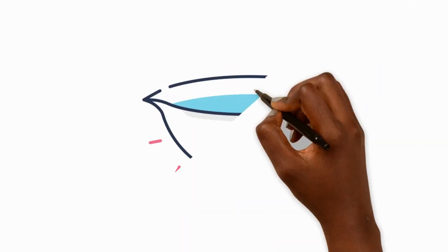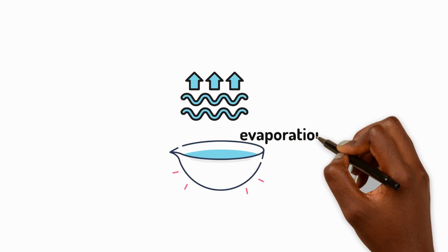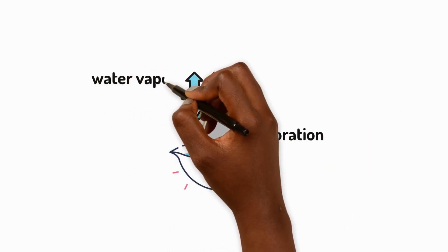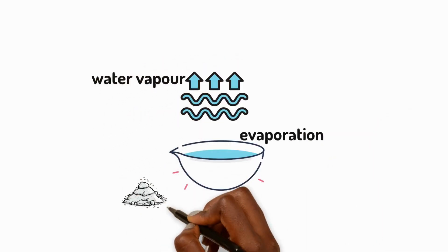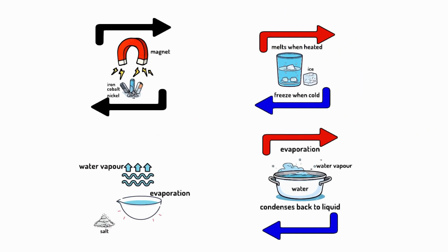Even soluble materials like salt can be separated from water after they dissolve. In this example, we can use evaporation. The water leaves the solution as water vapour and the salt is left behind. This is yet another reversible change and we separate the mixture.